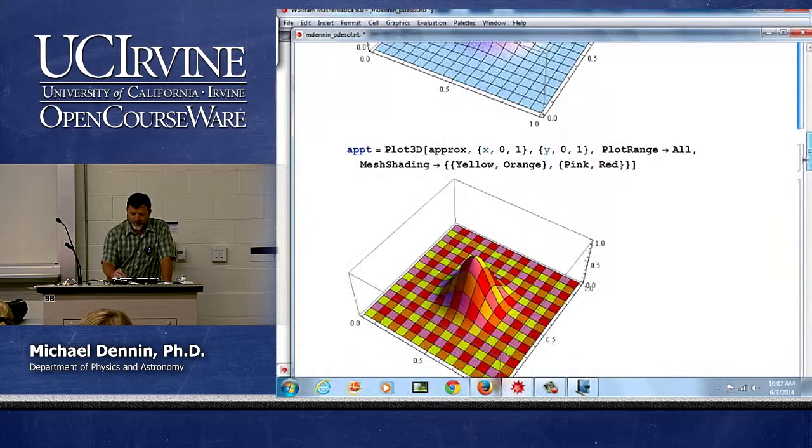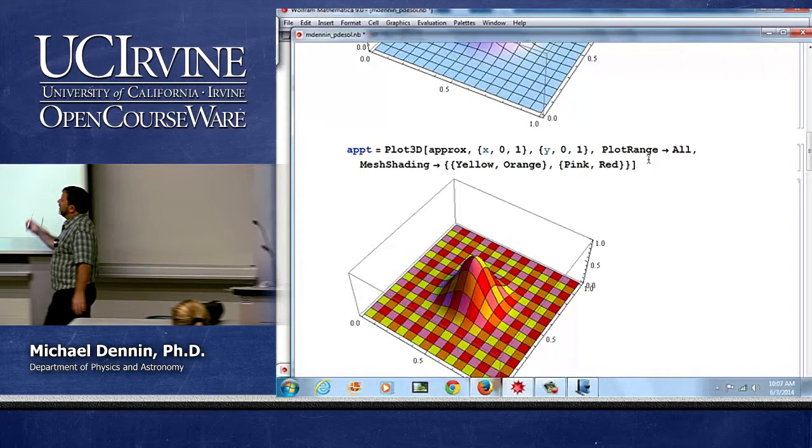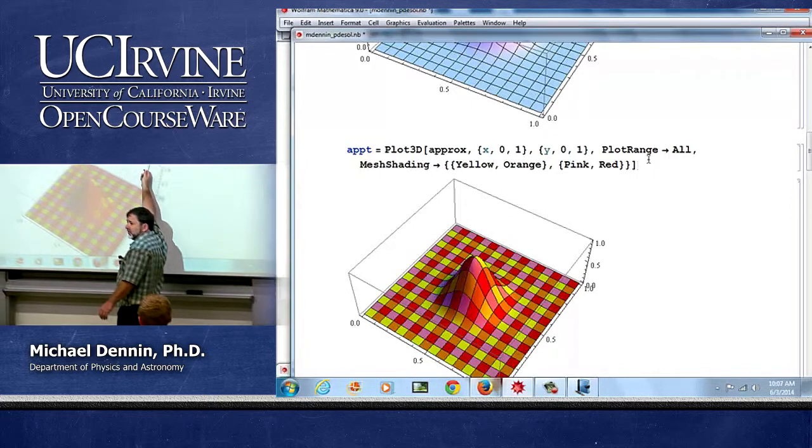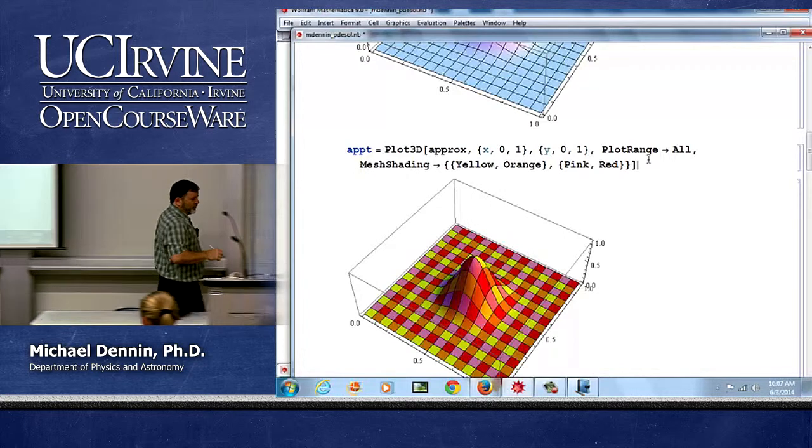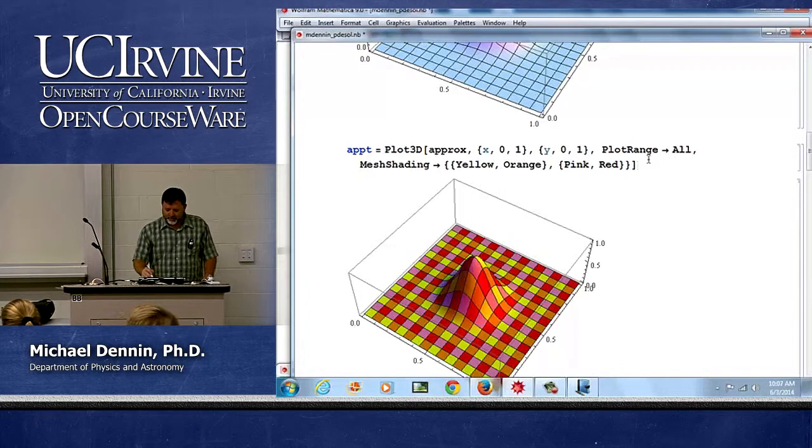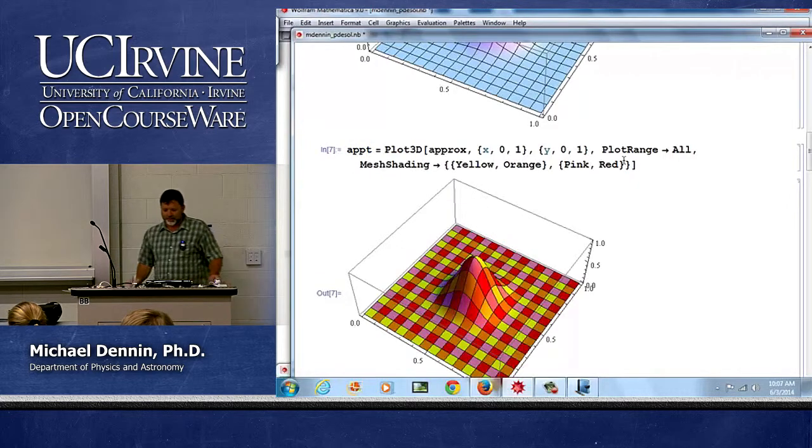Now I'm going to plot the approximation. And notice I'm changing the mesh shading because I want to show you it compared to the other one. So you can set up mesh shadings, I'm using fun colors, yellow, orange, pink and red.